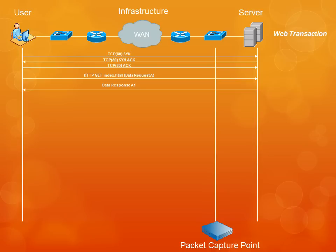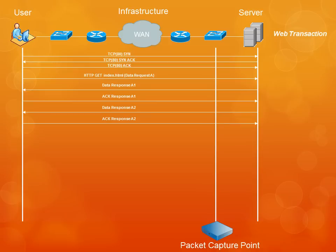In this example, I've simplified the transaction to only show two packets worth of data going out to the user. Since this transaction is using TCP, there are control processes in place to make sure the server doesn't overload the user or the network with data. Part of this control mechanism is the system of windowing, in which the server will only send a certain number of packets before requiring an acknowledgment from the user. Once the server receives the acknowledgment, the next window of packets will be sent.